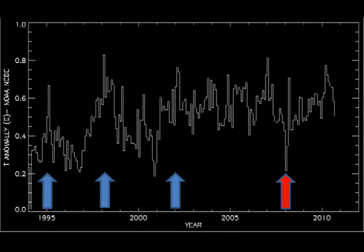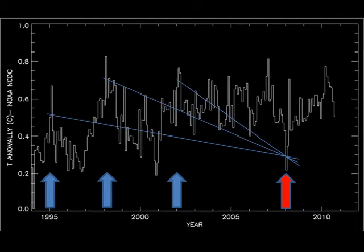2008 is their favourite stopping point — it is at a temperature minimum. If you deliberately start from a high point and choose a low point to end your analysis, then you are not going to find the right trend. This is cherry picking.